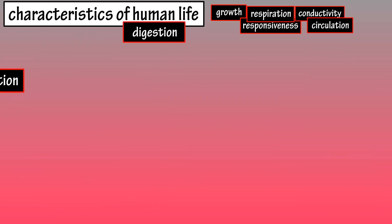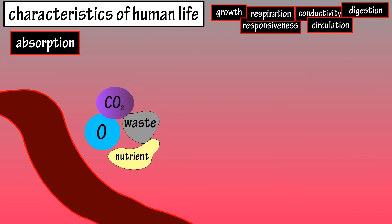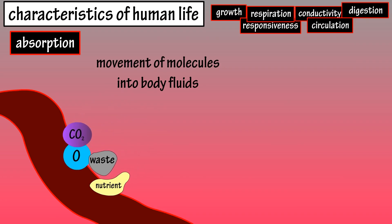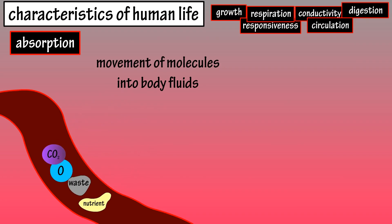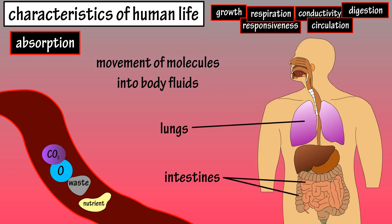Absorption is also a characteristic of life. Absorption is the movement of molecules, such as gases or digested food, into body fluids to be transported to cells. Most absorption of molecules takes place in the lungs and intestines, where the molecules are sent into the bloodstream.